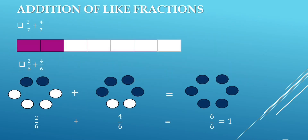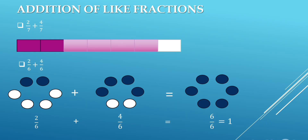Now, addition of like fractions. 2 upon 7 plus 4 upon 7. In this strip, the total number of equal parts are 7, and 2 parts are shaded. We have to add 4 upon 7 to 2 upon 7, so we will shade 4 more parts. Now the number of shaded parts are 6. So the sum of 2 upon 7 plus 4 upon 7 equals 6 upon 7. Please note: while adding fractions, we do not add the denominators — we add numerators only.